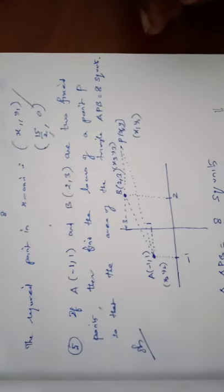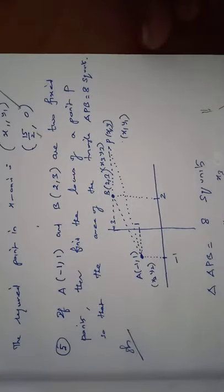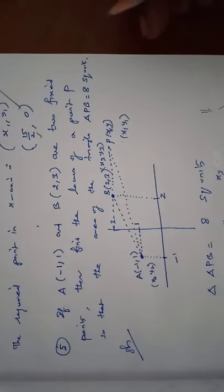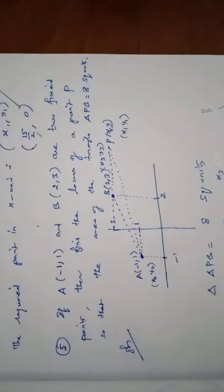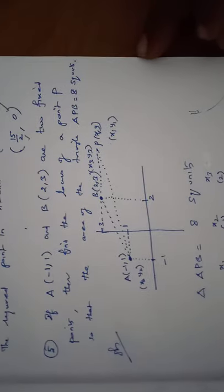Problem number 5: A(-1, 1) and B(2, 3) are two fixed points. Find the locus of a point P such that the area of triangle APB equals 8 square units.